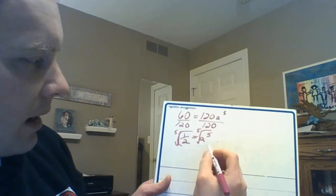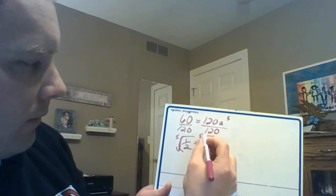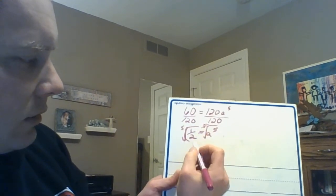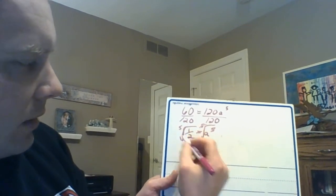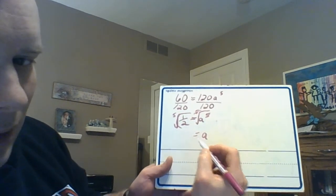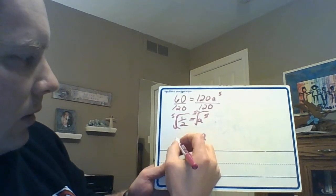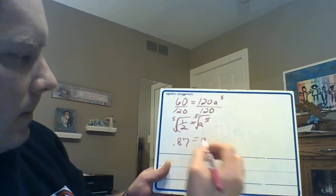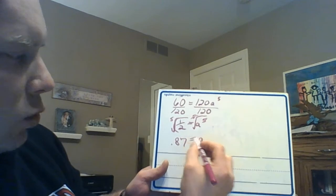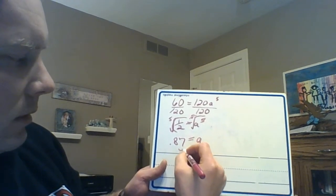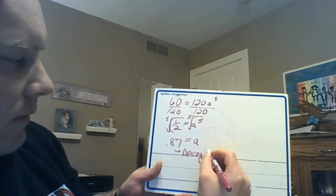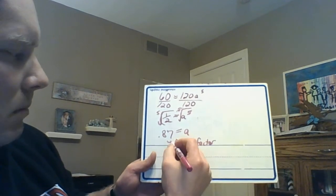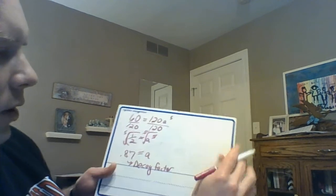Take the fifth root of both sides. The fifth root and that undo each other there. There is another way I can show you that, but for now let's just do this. When you type this into your calculator, if you're not sure how to type that in, let me know and I can go through that with you. But you get approximately 0.87. That's your a value, that is your decay factor. It's really important that you know what those wordings mean.